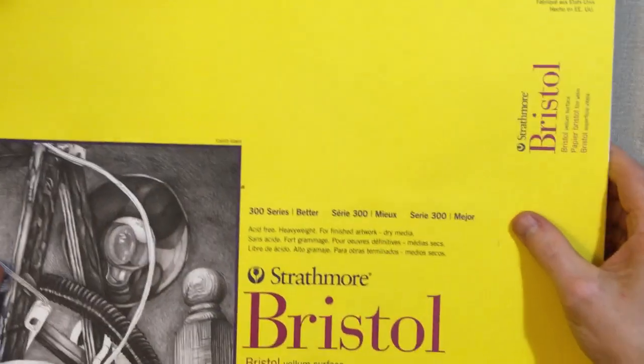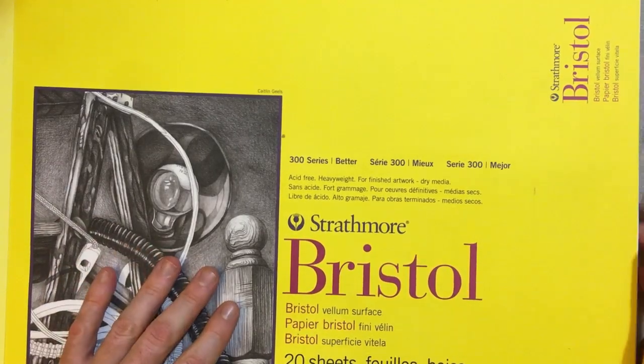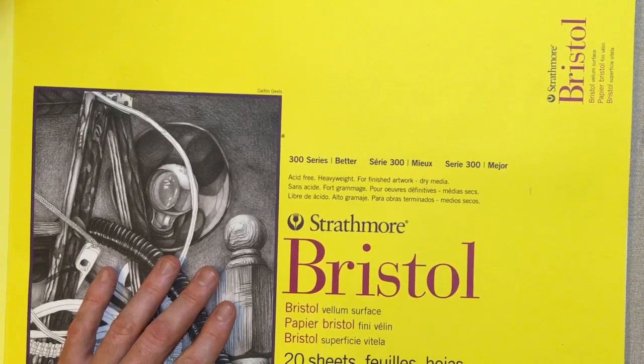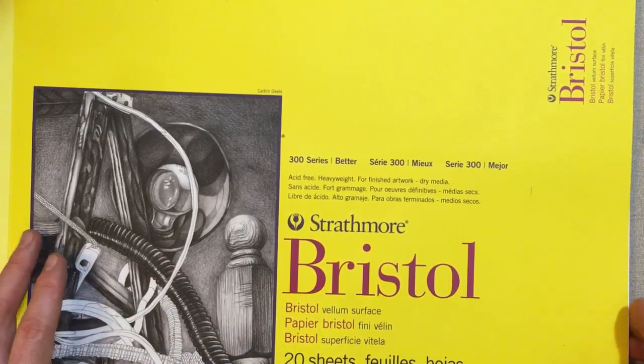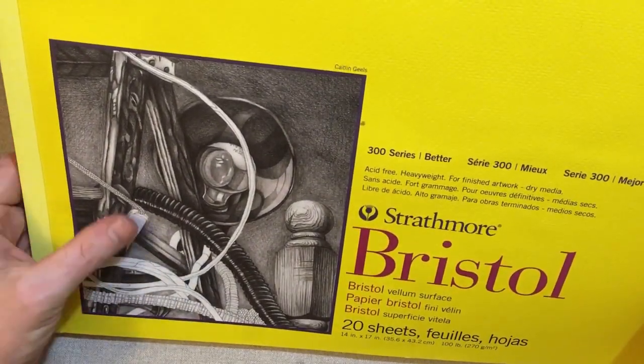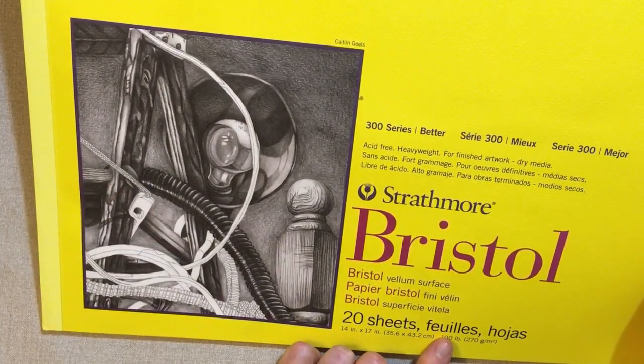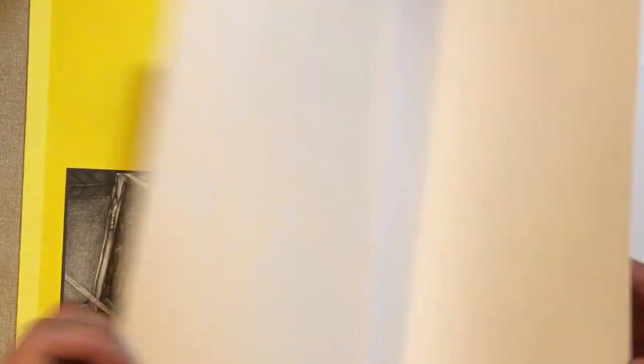For the finished drawings, most of the paper I've used has been Bristol board. Here, this is Strathmore Bristol board. And this is, I believe, 100 pound. Yeah, 100 pound. When you see the poundage on a paper, what that means is if you were to weigh a ream, 500 sheets of paper, that's how much it would weigh. So the heavier the number there, the thicker the paper. So this is a very nice paper, almost like a board. It's kind of like a thinner cardboard. So it's very durable.